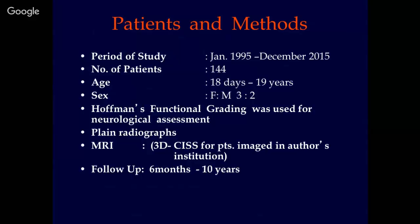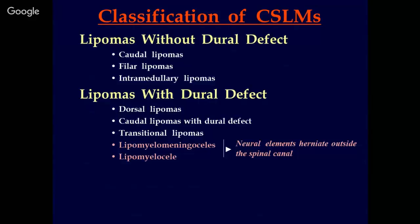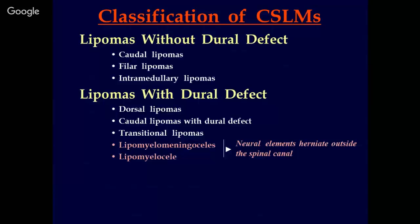This is the classification we are proposing. Lipomas are grossly divided into two groups: lipomas without dural defect and lipomas with dural defect. In the first group, there are three subtypes: caudal lipomas, filar lipomas, and intramedullary lipomas. In the second group — lipomas with dural defect — we have dorsal lipomas, caudal lipomas with dural defect, transitional lipomas, lipomyelomeningocele, and lipomyelocele. In the second group there are five subtypes.